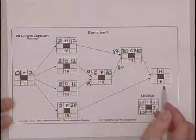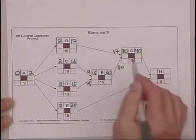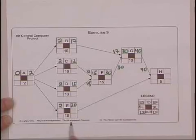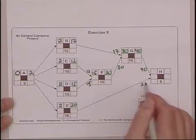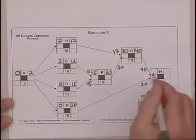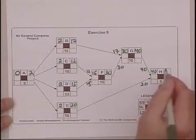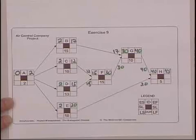And then finally we have the last activity, which is also a merge activity. H can't start until both G and E are done. The earliest G is done is 40. The earliest E is done is 20. We choose the larger number, 40. 40 and 5 is 45. And we would now say that the earliest time this project could be completed is in 45 days, assuming days is the time unit that we're using.